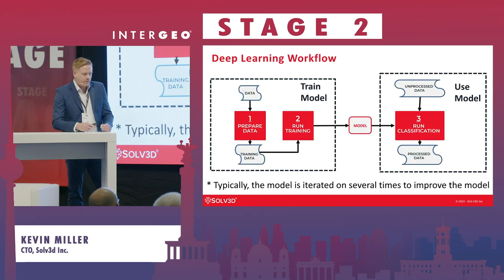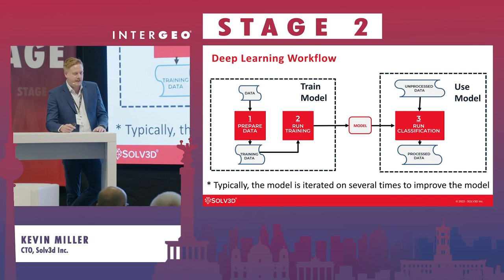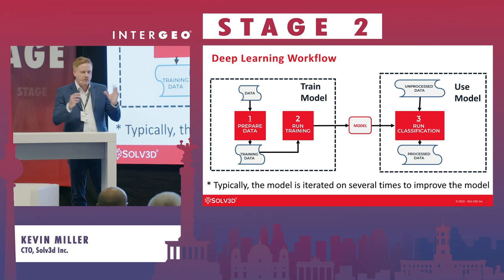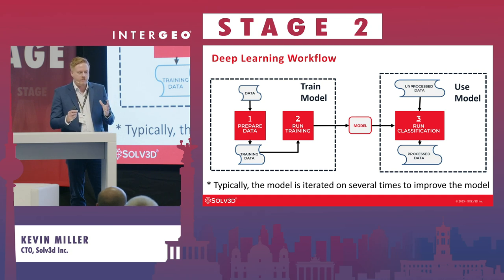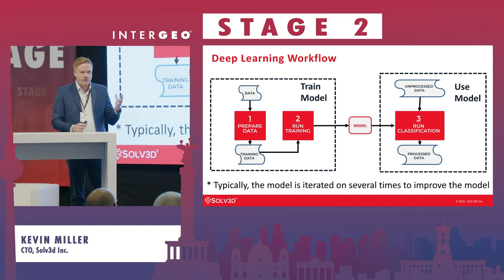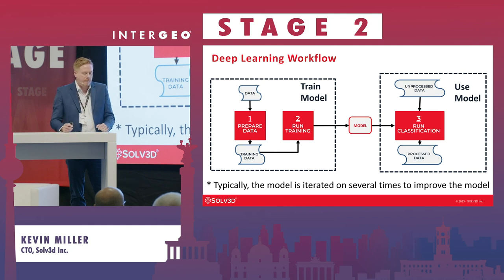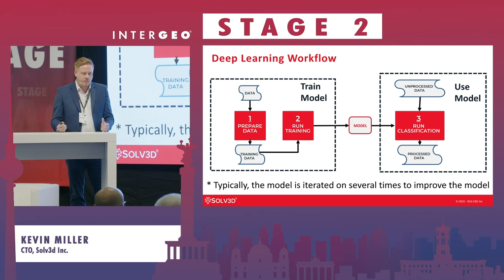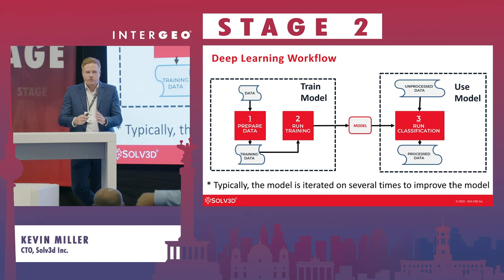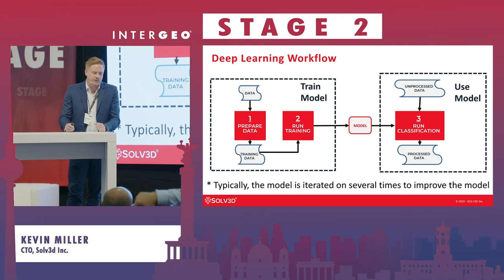At a high level, deep learning has two stages. On the left is the training stage: you give the computer examples of what you want it to learn — such as a manually classified point cloud or polygons of certain objects in imagery. The computer creates a model, which is essentially a program. On the right is the inference stage: you run that model on new data, and it classifies an unclassified point cloud or finds more of those objects in new imagery.